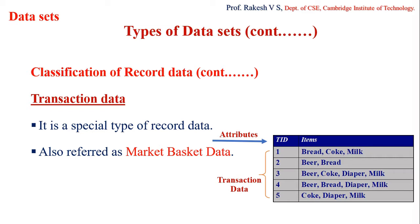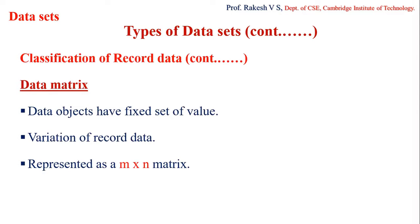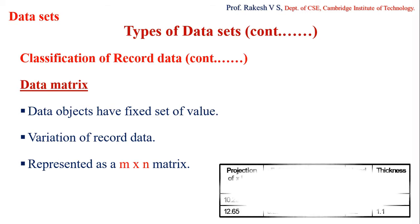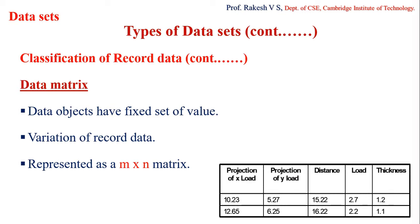The next type is data matrix. If a data object is a collection of data with fixed attributes, it is treated as a point in a multi-dimensional space. Such data can be represented as an m×n matrix, where m rows represent objects and n columns represent attributes. This is called a data matrix or pattern matrix, and it is a variation of record data.